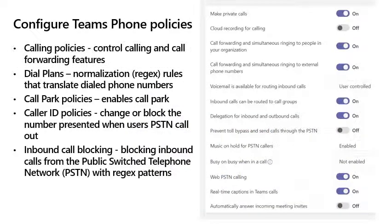Configuring Teams phone policies. Some of the policies you can configure within the Teams service include calling policies, which allow you to control calling and call forwarding features. We also have dial plans, which have normalization rules that allow you to translate dialed phone numbers — think about three-digit or four-digit calling.